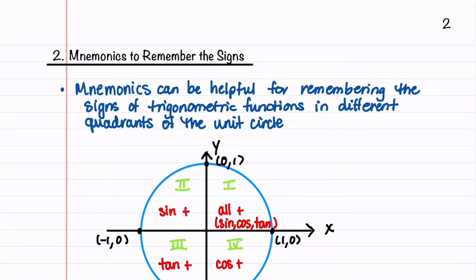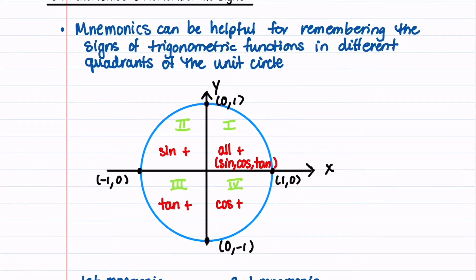Mnemonics can help us remember the signs of the trigonometric functions in different quadrants of the unit circle. We'll begin by highlighting the first letter of the function or functions that are positive in each quadrant. In quadrant one, all the functions are positive, so we're going to highlight A. In the second quadrant, sine is positive, so we'll highlight S. In the third quadrant, tangent is positive, so we highlight T. And then in the fourth quadrant, cosine is positive, so we highlight C.